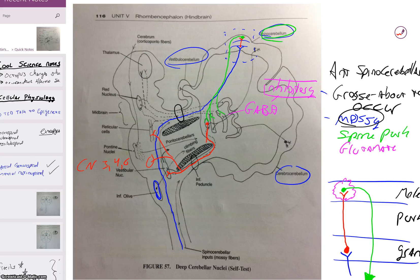The globose and the emboliform, they essentially count as one, they are called the interposed. So we have globose, emboliform, and they collectively are the interposed.